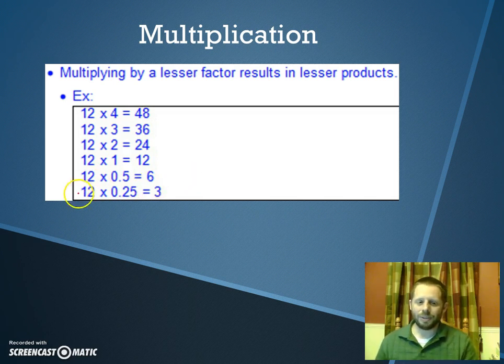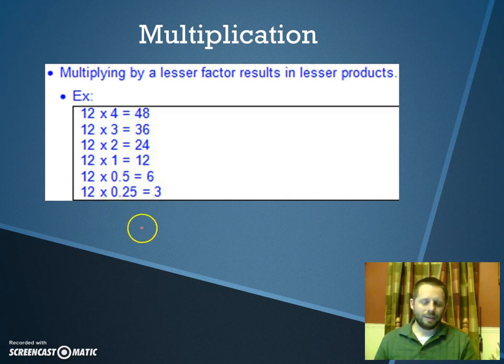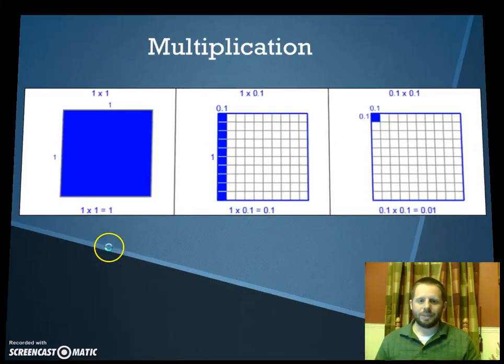Even though the number we're starting with is 12, when you multiply by a value that is between 0 and 1, a decimal value, your outcome ends up being something less than the number you started with. So let's get into some examples.